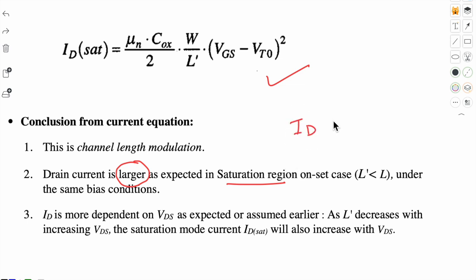Now we can see that in saturation region, the drain current depends on VDS. And why? Because this is L' which depends on VDS. And this will be larger than what we had expected from earlier analysis. It will be more than the expectation. Because L' is smaller than L. So denominator portion L, if it is small, then ID saturation will be more dependent on VDS than we assumed earlier.